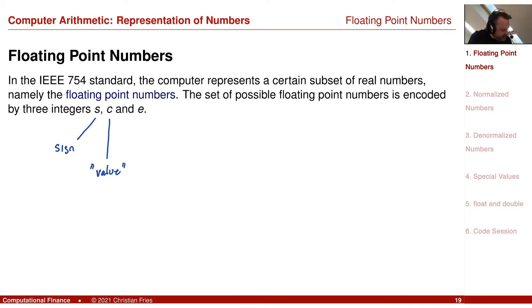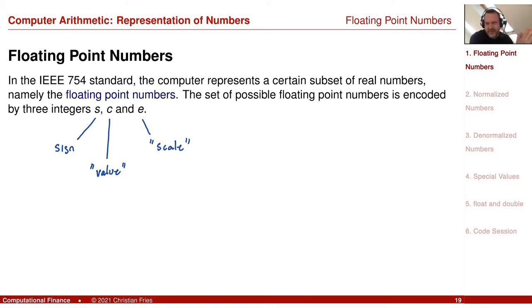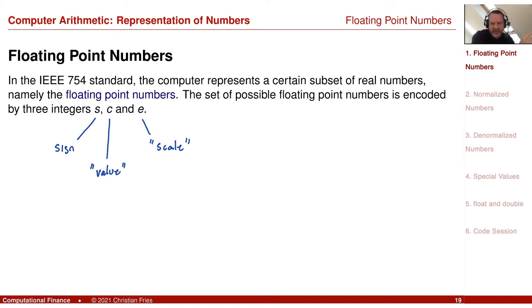E represents the scale — something like 1,000, 10,000, 100,000, 1 million. So there is a splitting between value and scale: certain values and then certain scales. But instead of being base 10 as in my example, it's all based to 2. The standard can be defined in a general way, but what I discuss here is the base-2 representation of these numbers.